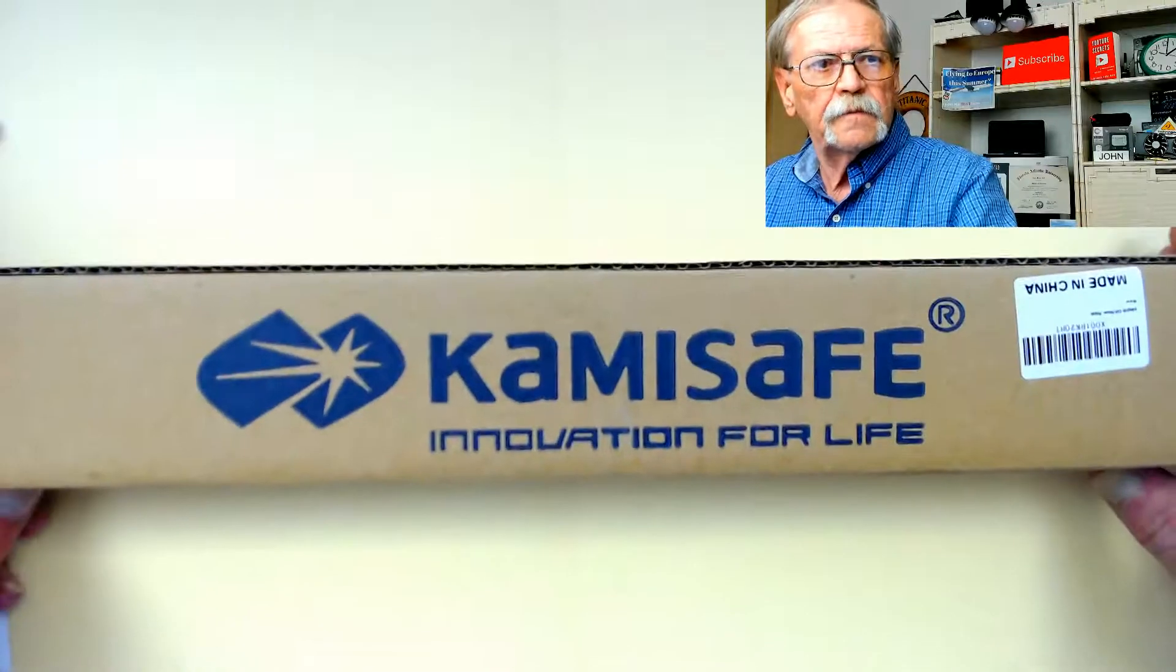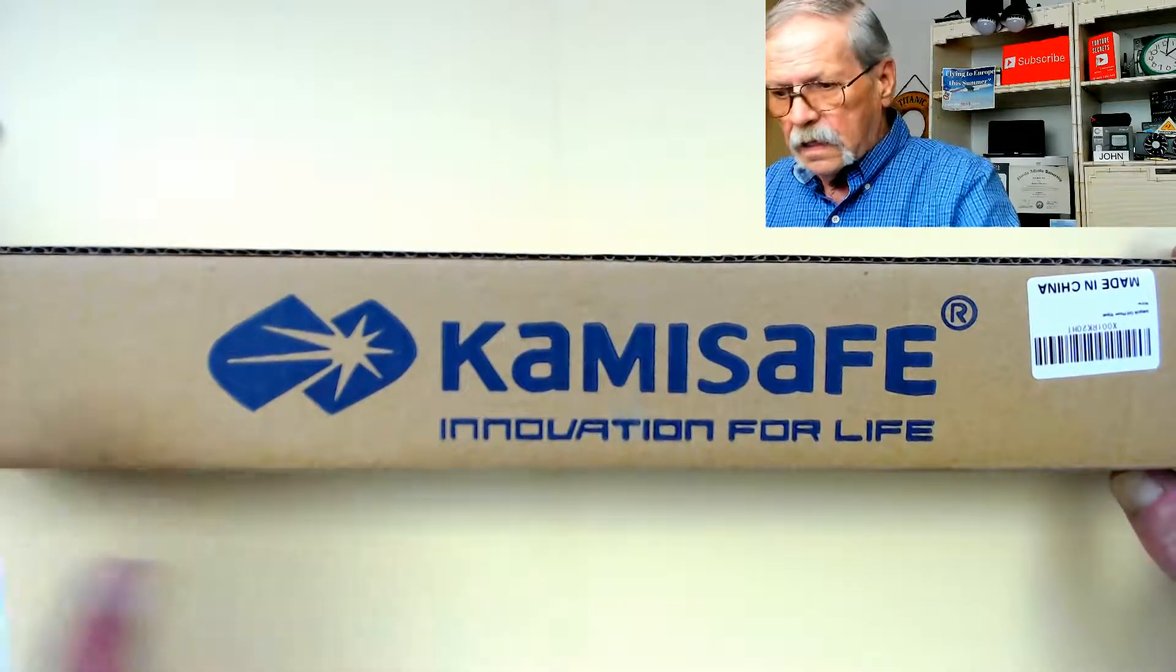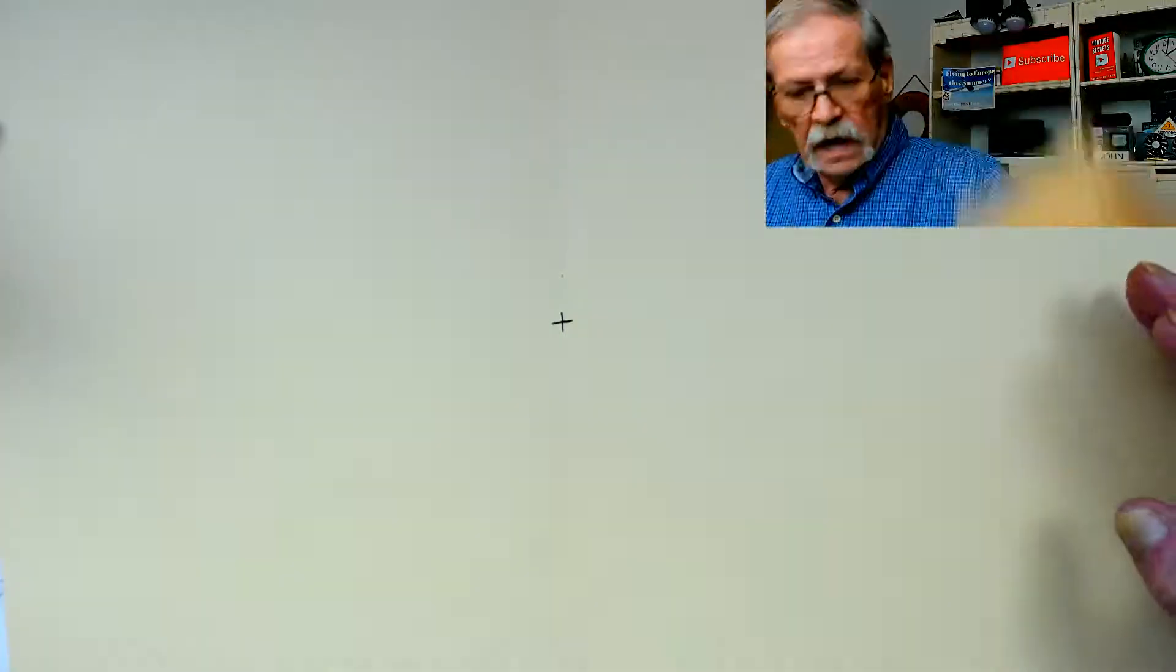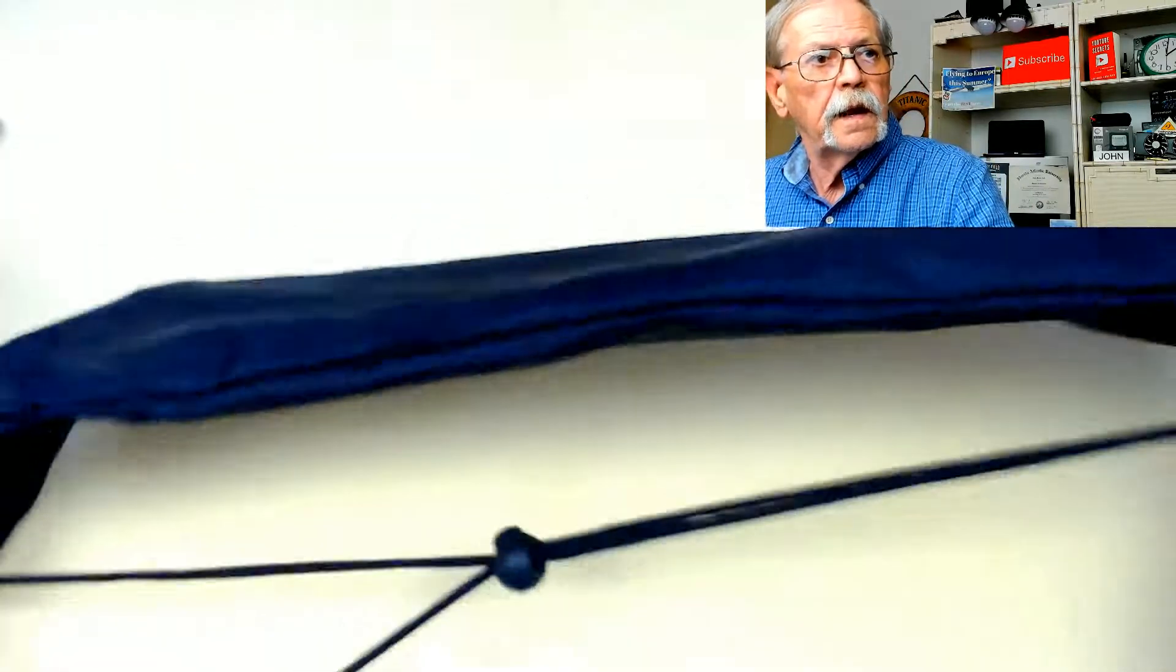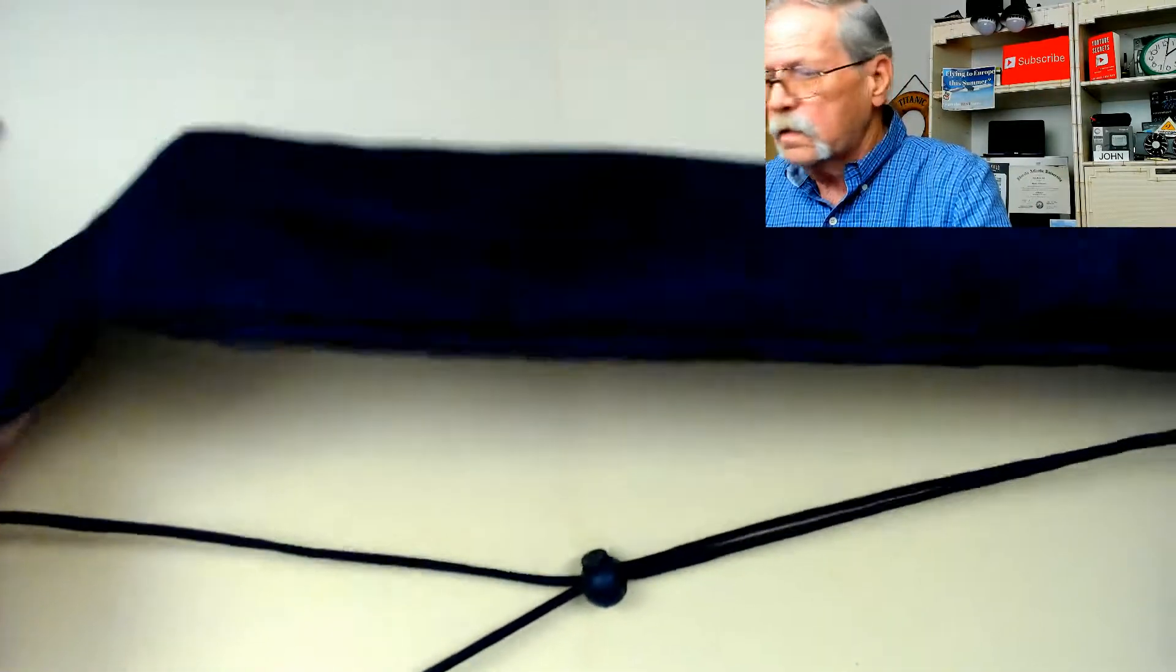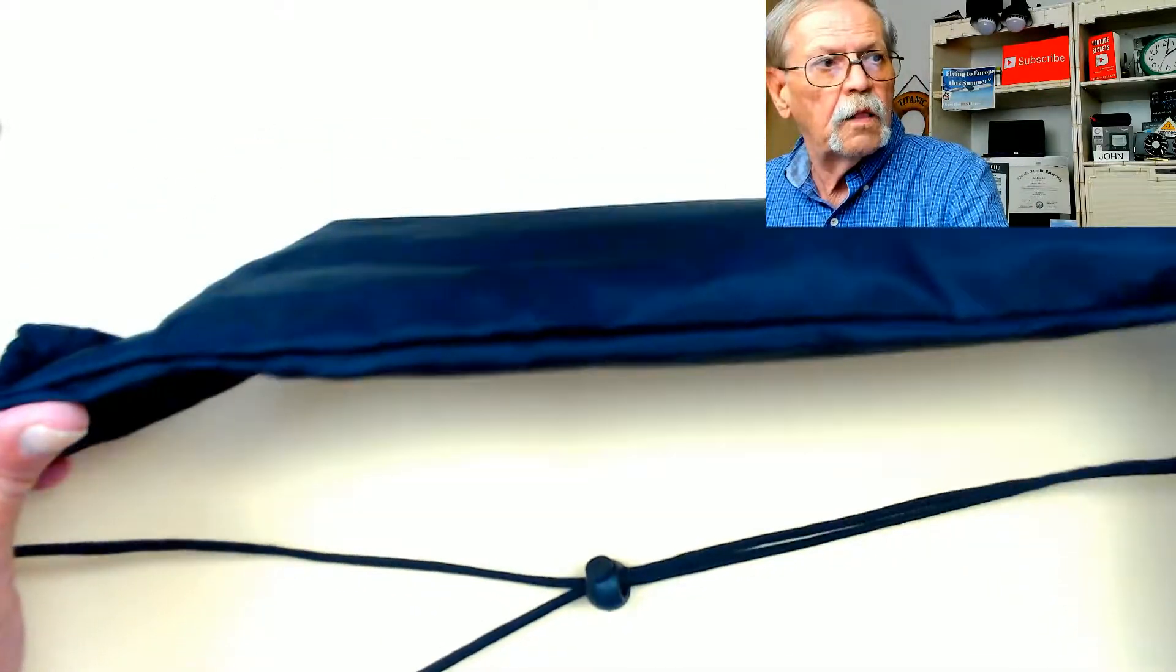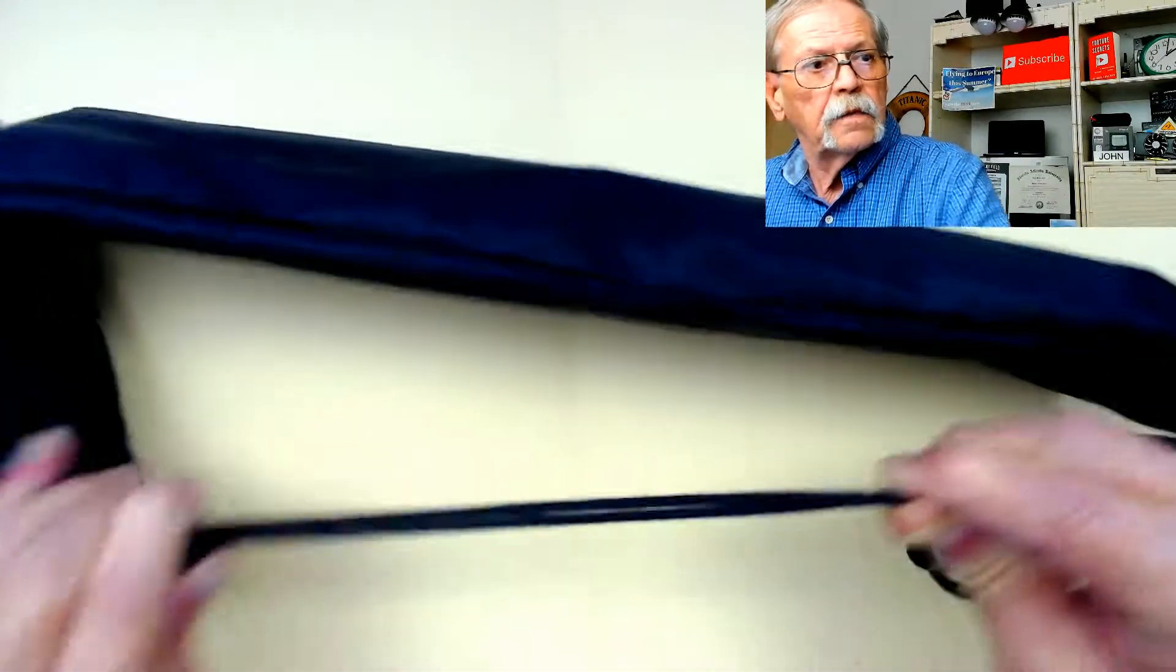It comes in a box like this when you first get it, and inside that box is an over the shoulder carrying case. It's a synthetic cloth, has a stopper on it to close it, and then of course it has a string that you can throw over your shoulder.